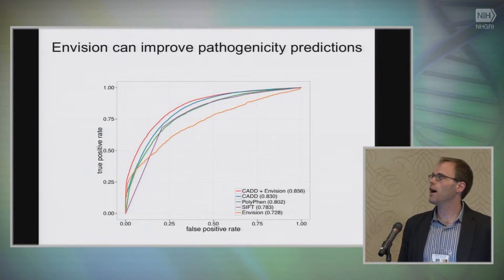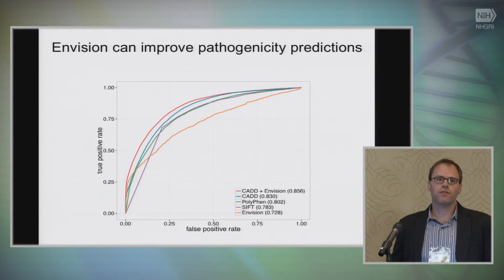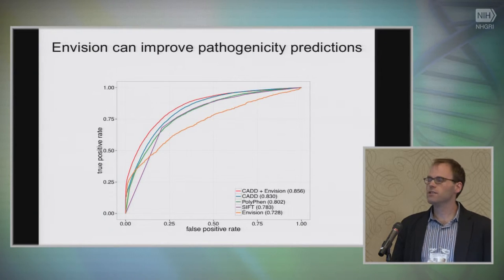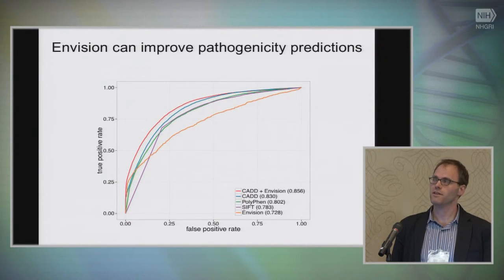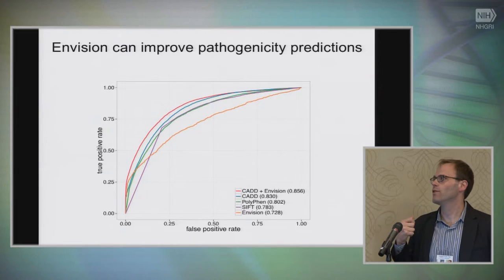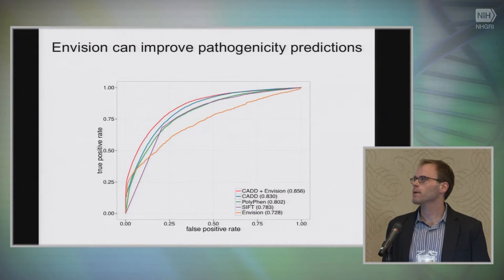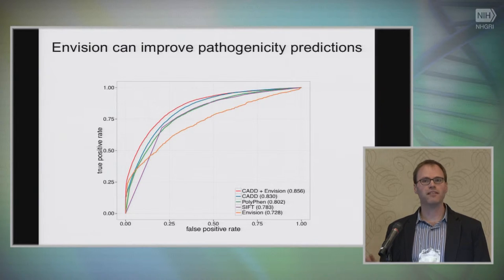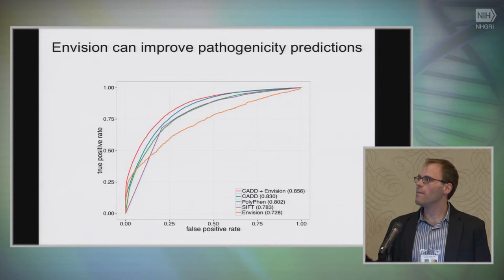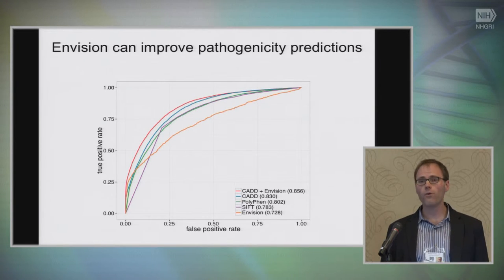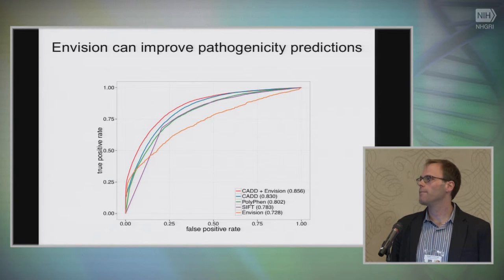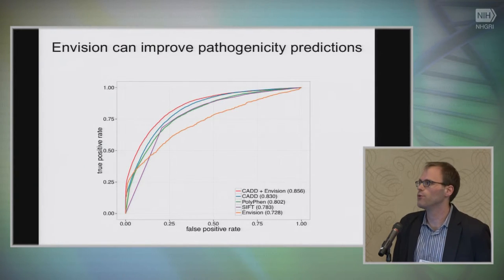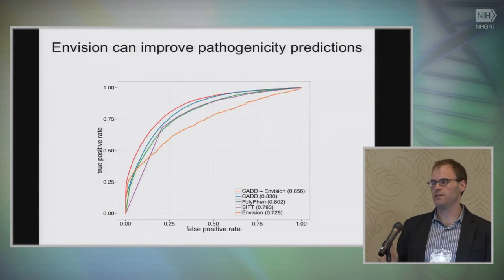We also tried to look at pathogenicity predictions using ClinVar data, and we weren't really sure what would happen here — we haven't trained Envision to do this. Envision doesn't do that well on ClinVar data, and perhaps that's not surprising, because we envisioned Envision being paired with knowledge about what would happen when you lose function in a protein. However, if you make a mixture model of Envision and the predictor that performed best on this data — which was CADD — that mixture model actually does a bit better than either predictor alone.